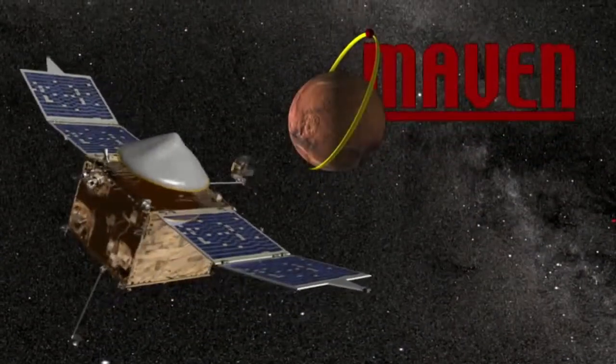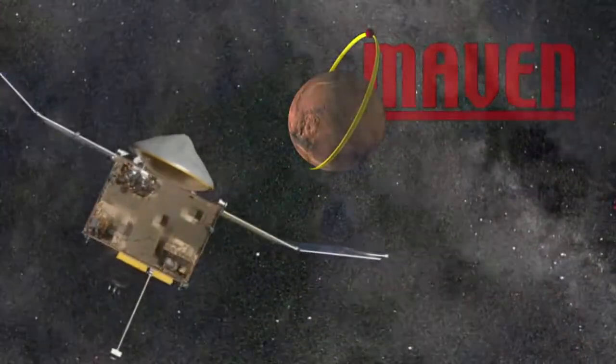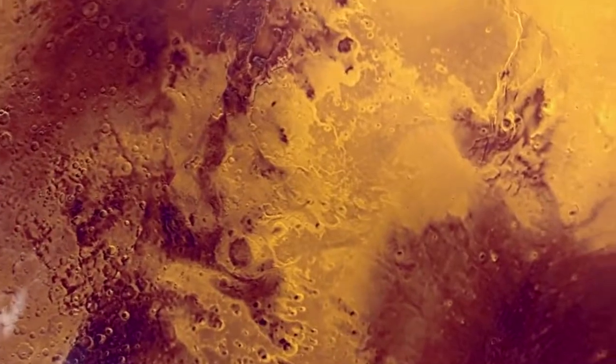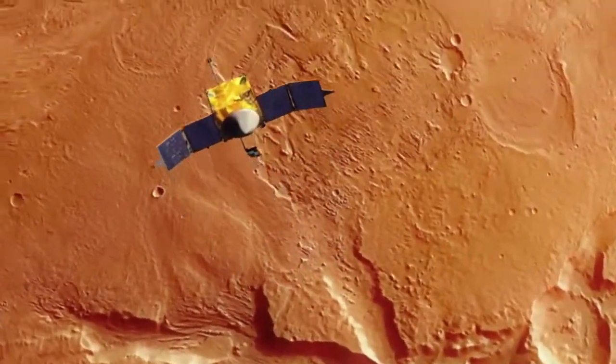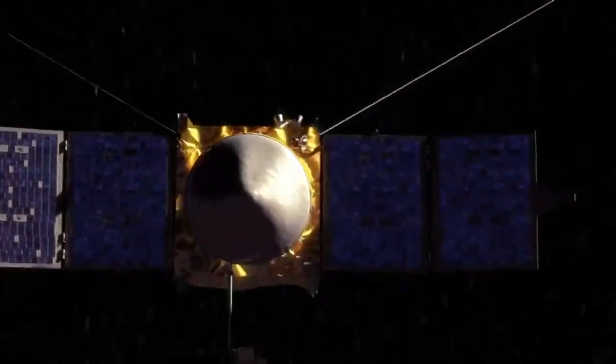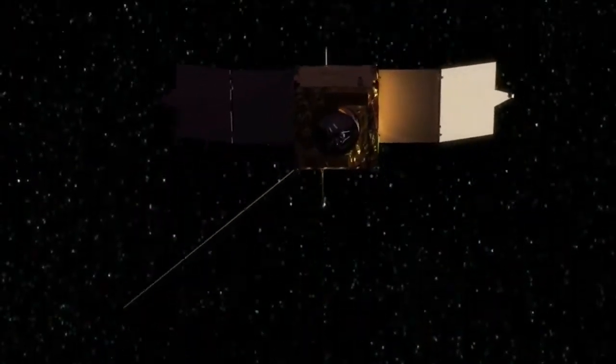MAVEN is the Mars Atmosphere and Volatile Evolution mission. We're trying to understand, basically, why the climate changed on Mars, why Mars appears to have gone from an environment that was habitable, to microorganisms at least, to one that is the cold, dry, uninhabitable environment we see today. By looking at the nature of the upper atmosphere today, and how gases can be lost out of the atmosphere to space today, we learn about the processes that control the atmosphere, and we're going to have a good understanding of what the history of the atmosphere has been.